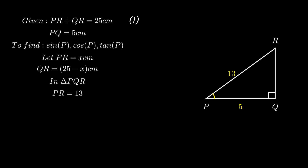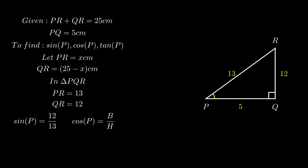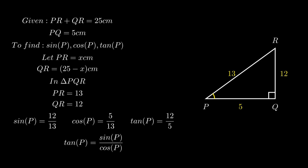Since X represents side PR, therefore PR equals 13 cm. Using equation 1, side QR equals 25 minus 13, which equals 12 cm. Therefore, sin P equals perpendicular over hypotenuse, which gives 12 over 13. Cosine P equals base over hypotenuse, which gives 5 over 13. And tangent P equals perpendicular over base, which gives 12 over 5. It should also be noted that tangent P can be evaluated by taking the ratio of sine P to cosine P, which on simplification also gives 12 over 5.